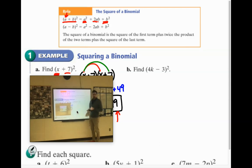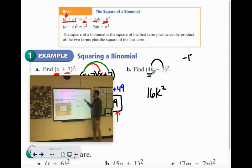4K minus 3 squared. If we square the first term, 4K times 4K would be 16K squared. The middle term, remember, is when you multiply them together and multiply by 2. Now 4K times negative 3 would be negative 12K, and negative 12K times 2 would be negative 24K.